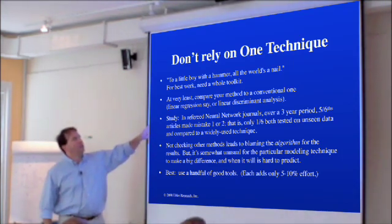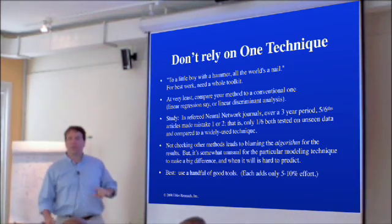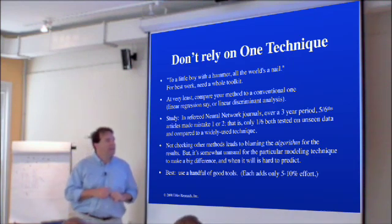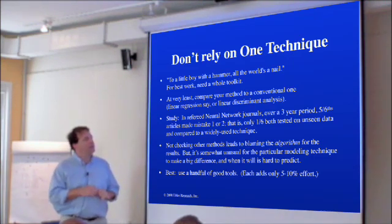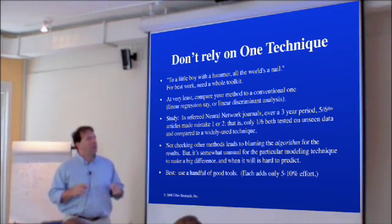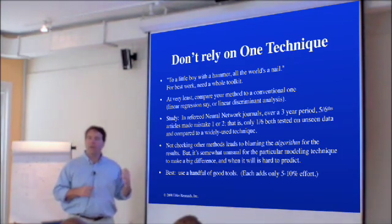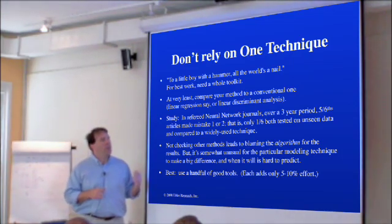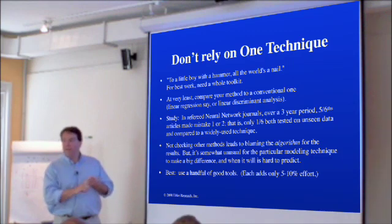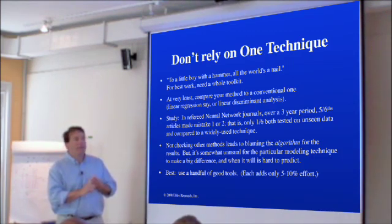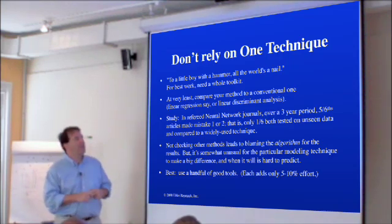Somebody did a study of neural network refereed journals, which go through a significant process of examination. Over a three-year period — now this is about ten years ago, early on in the enthusiasm of neural networks — five out of six articles either made mistake one or mistake two. So only one out of six articles over that three-year period both used out-of-sample data and reported the results of two techniques. Only 17% of the articles did that two-by-two table at minimum.